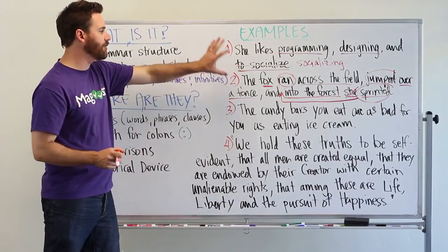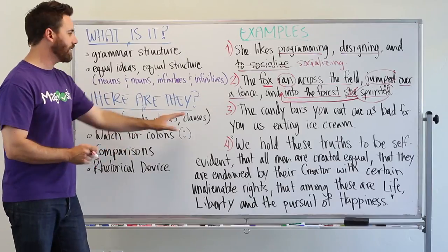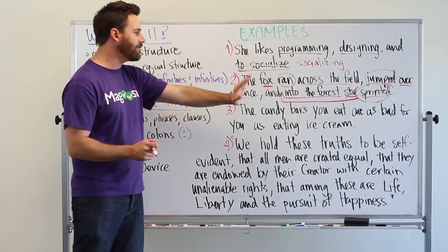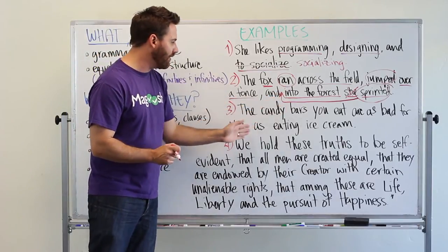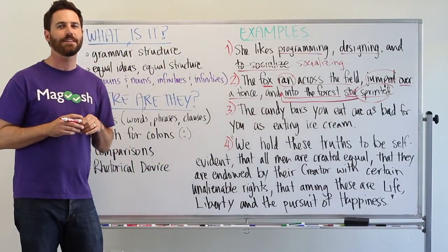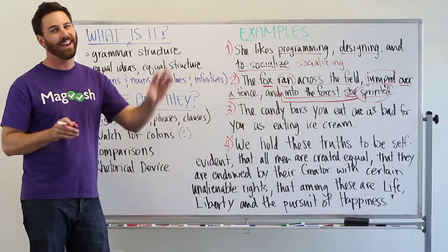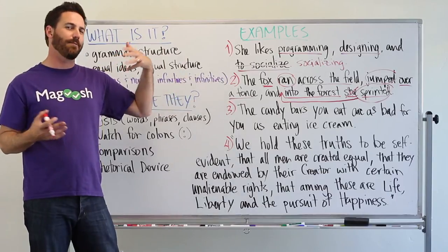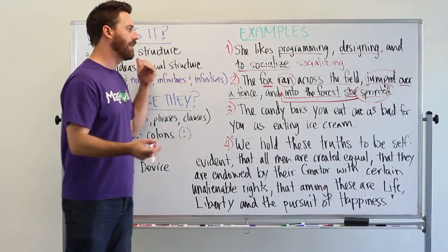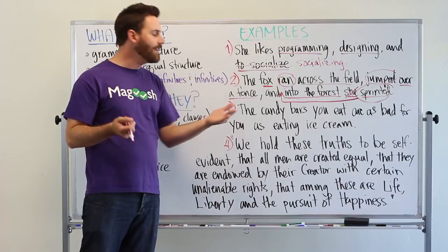Okay, number three. So these first two dealt with lists. The next one is a comparison. The candy bars you eat are as bad for you as eating ice cream. This one's a little more subtle. You might not notice it at first as being wrong. And someone would say this sentence probably out loud and you wouldn't even think twice about it. But, on the GMAT, we have to pay attention to these things.